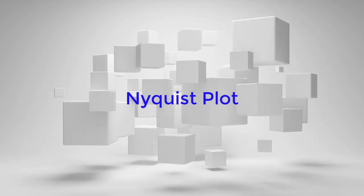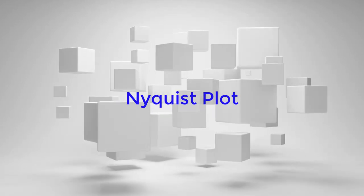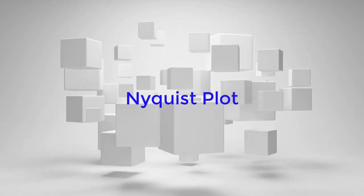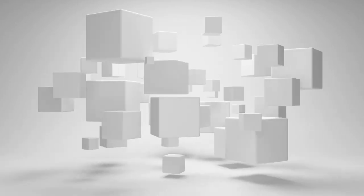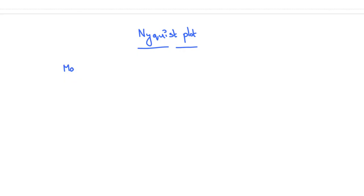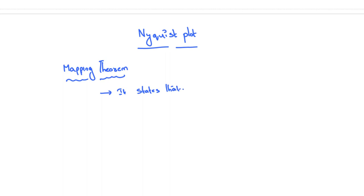We'll discuss the Nyquist plot in detail. The prerequisite of the Nyquist plot is the polar plot. Before starting the Nyquist plot, we'll talk about the mapping theorem. This theorem states that every point of the S-plane will get mapped to a corresponding point in the G(s)H(s) plane, where G(s)H(s) is any function of S.